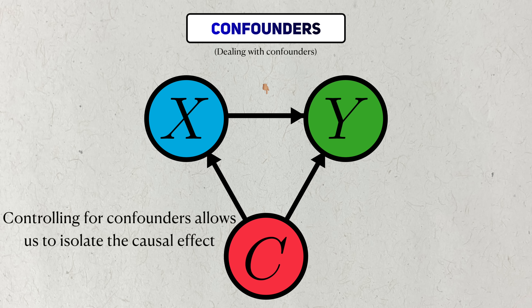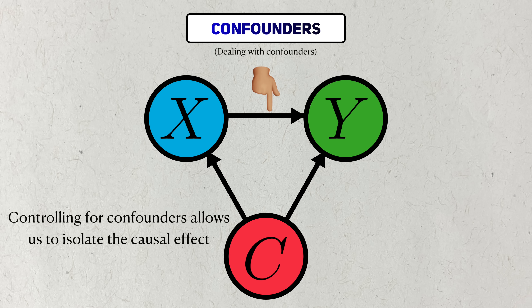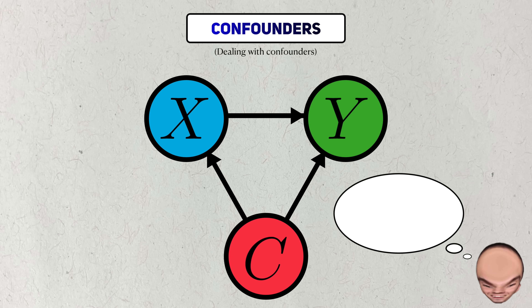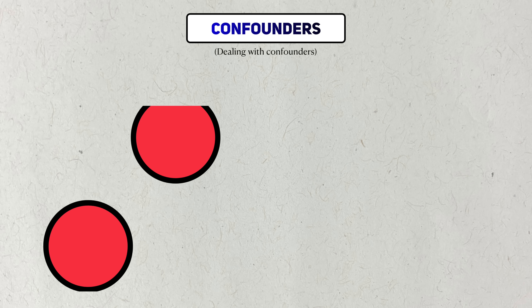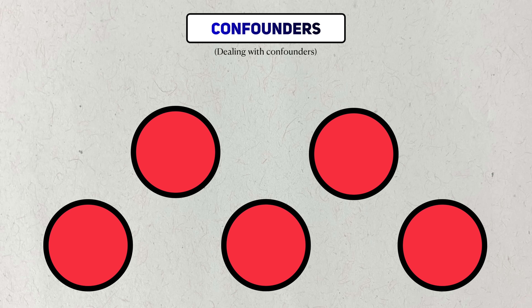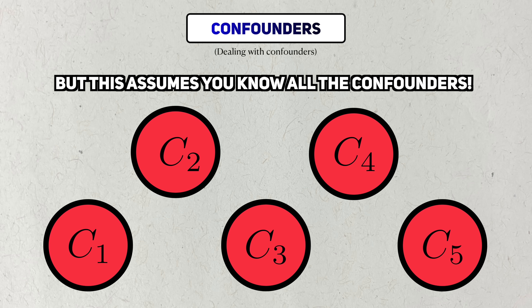It's clear from these two examples that the solution to confounding is to include confounders in your analyses. With linear regression, including confounders in the model changes how we interpret the regression coefficient for the exposure — instead of just being an average change in the outcome for a unit increase in the exposure, the coefficient gains the added interpretation of holding other variables constant, often phrased as 'controlling for other variables.' But this makes the assumption that you know all the confounders in the first place.